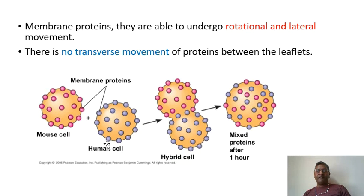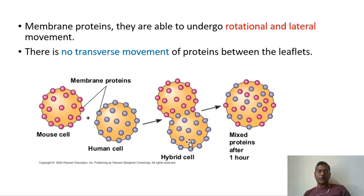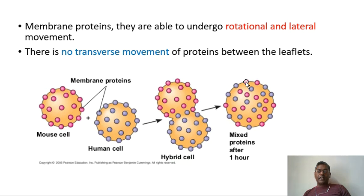One piece of evidence that membrane proteins move on the plasma membrane comes from the cell fusion experiment, where a mouse cell and a human cell are taken and their proteins are labeled with different colors. When the cells are fused using a Sendai virus, the single hybrid cell formed has proteins from both sources, and those proteins tend to distribute equidistantly from each other — confirming that the proteins have moved and arranged themselves evenly over the surface of the plasma membrane.